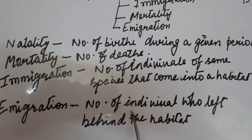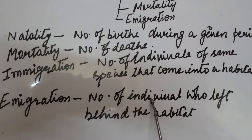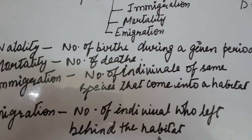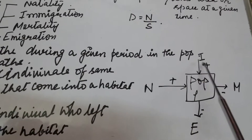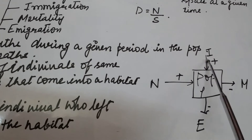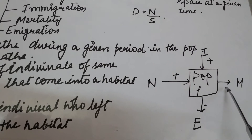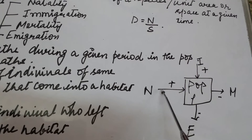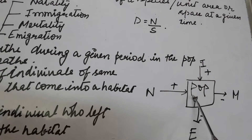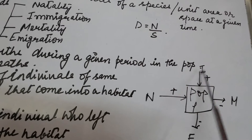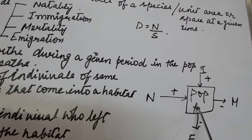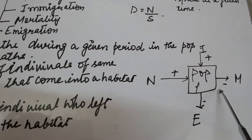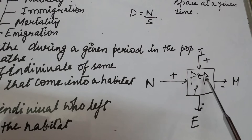Emigration is when the number of individuals of a population leave the habitat and go somewhere else during a given period of time. Population density is affected by all four factors: natality and immigration increase the population size, whereas mortality and emigration decrease the population density or size of the population.